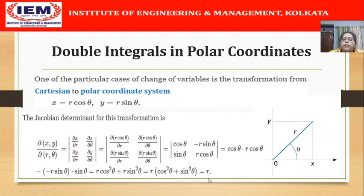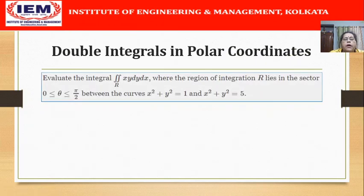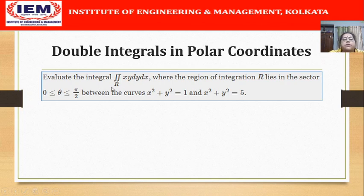Therefore, we should remember that the Jacobian for the transformation from Cartesian to polar coordinates is always R. Hence, when evaluating an integral with this change of variables, the differential dx dy will be replaced by R dr dθ. Now let us see some problems.